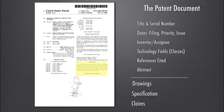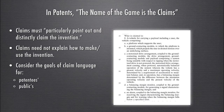Throughout the rest of the patent document there are sections including drawings — every patent is required to have drawings if they are useful to the disclosure. The specification is the textual part of the patent, and the claims are at the very end. The famous phrase from a court case is that 'the name of the game is the claims.' You can see a set of claims for a patent describing a vehicle for carrying a payload.